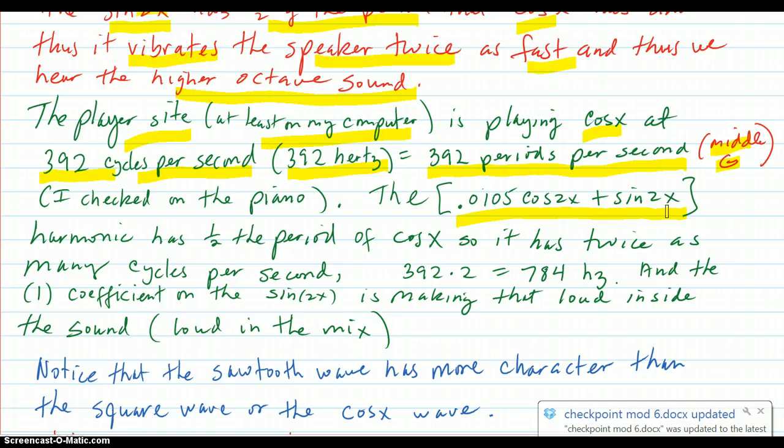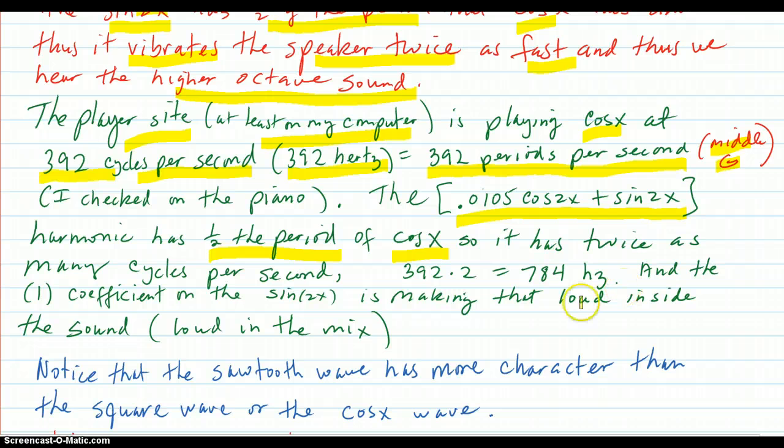These parts of this Fourier polynomial, they're actually called harmonics. And now you can realize why. They have half the period. This one has half the period of cosine x. So it has twice as many cycles per second. So it's actually playing at that part. It's sounding at 784 hertz, up the octave from the 392. And the one coefficient on the sine 2x is making that loud in the sound, because one is a real high coefficient compared to the others. So it's loud in the mix. That's why we hear it.